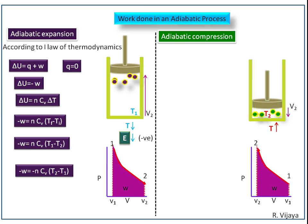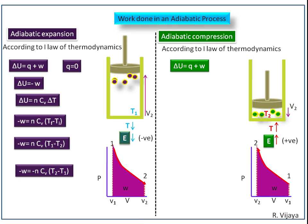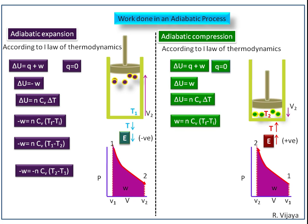The temperature increases from T1 to T2, so energy also increases, meaning its value should be positive. As stated previously, delta U is equal to Q plus W. Since Q is equal to zero and the change in energy is positive, delta U becomes W. We know that delta U is equal to N Cv delta T. Substituting the values, we get W equals N Cv into T2 minus T1. So work done in an adiabatic compression is W equals N Cv into T2 minus T1.